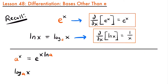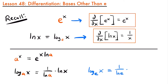What about log base a of x? This is equal to 1 divided by the natural log of a times the natural log of x. To verify: when we have log base e of x — the natural log function — using this definition with a equal to e gives us 1 divided by the natural log of e times the natural log of x. The natural log of e is just 1, so this simplifies to the natural log of x, confirming the definition.